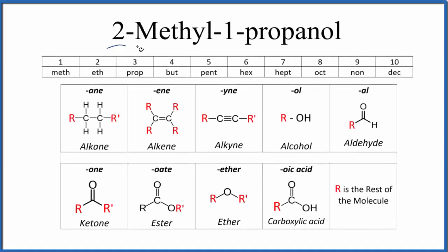Let's write the structural formula for 2-methyl-1-propanol. This is also called isobutanol and 2-methyl-propan-1-ol. So we'll work with this here.